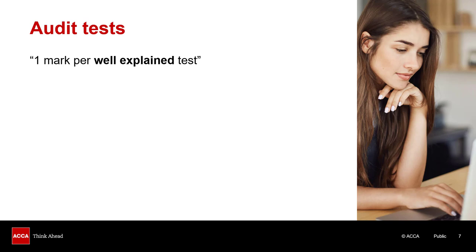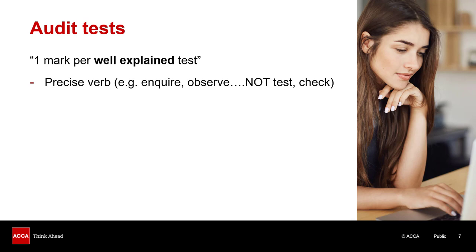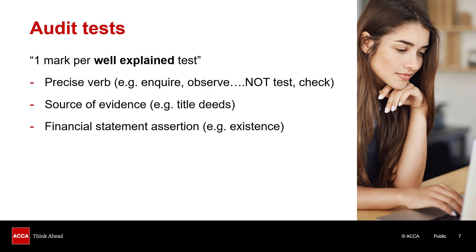In an audit tests question, the marking scheme says one mark per well-explained test. To make it well-explained: firstly, be precise — particularly with the verb you use. Say things like inquire, observe, or agree. Don't use general words like test or check, as those often don't score marks. It's best if you can quote a source of evidence — for example, agree something to the bank statement or title deeds. And it really helps if you can bring in a financial statement assertion such as completeness, existence, rights and obligations, or valuation.